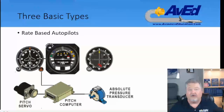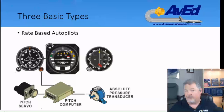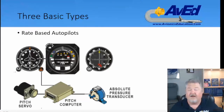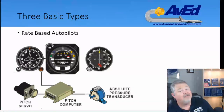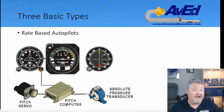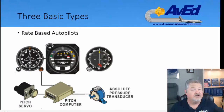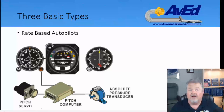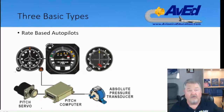Another name for wings leveler is control wheel steering mode, or CWS mode — this is where the autopilot holds the aircraft in the position the system was engaged. The pitch channel is a separate system that operates in altitude hold function. When altitude hold mode is selected, this sets the absolute pressure transducer to a null voltage, and the pitch computer monitors the voltage. Should the aircraft begin to climb, the voltage in the transducer will change, triggering a pitch computer input that sends a signal to the pitch servo to move the elevator down. The aircraft will begin to descend. When the zero or null voltage is reached again, the servo stops driving and the aircraft levels out.